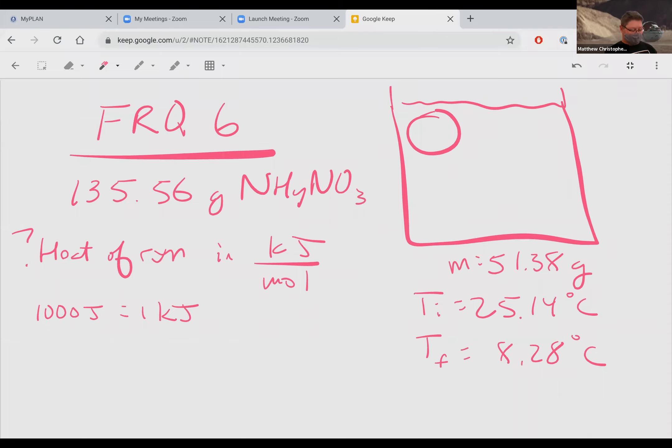We had 135.56 grams of NH4NO3, that's the chemical here. I'm going to put that as reaction here. And then this here is the water that's being put in. I probably didn't put it to scale.